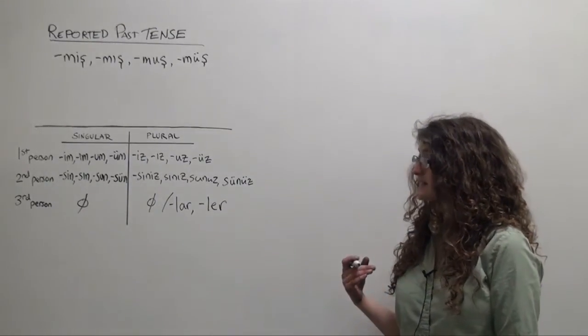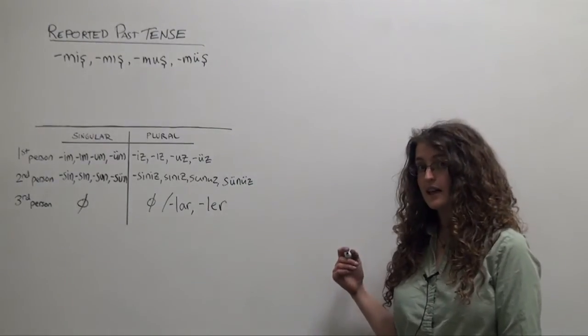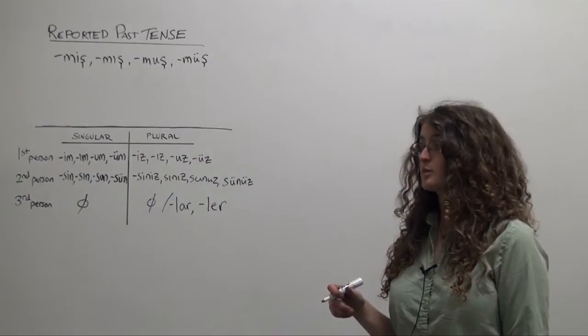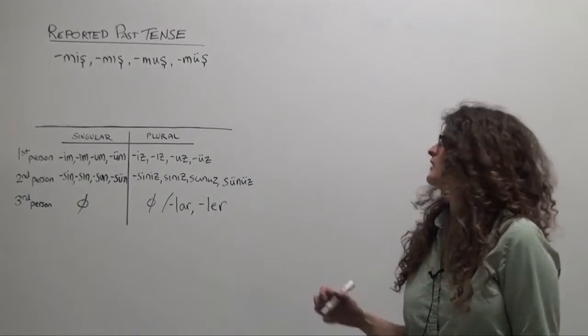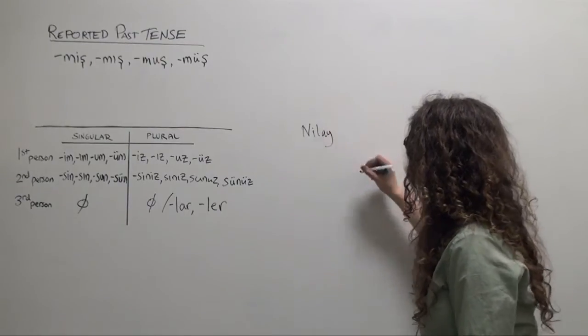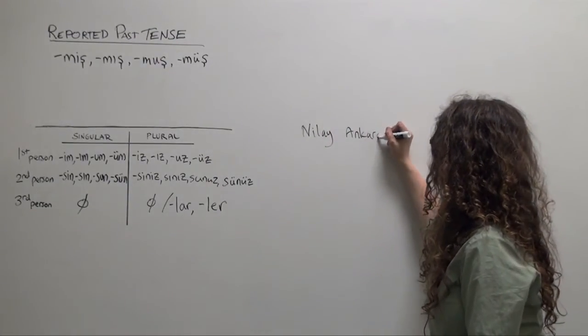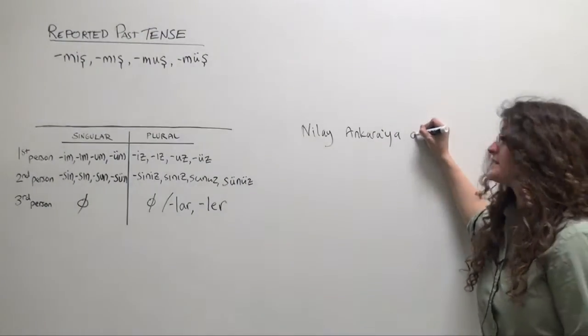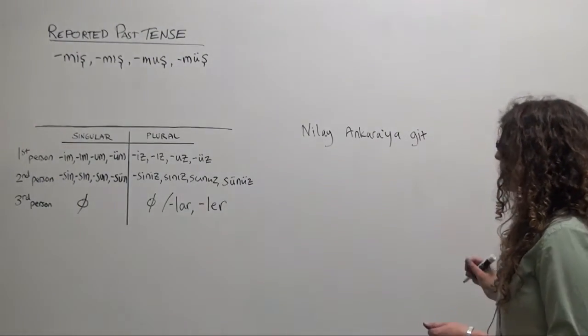So for example, let's say you want to say the sentence: Nilay, a Turkish woman's name, went to Ankara. Nilay Ankara'ya. The Turkish word for to go is gitmek, git.